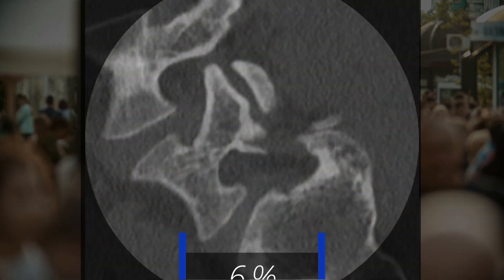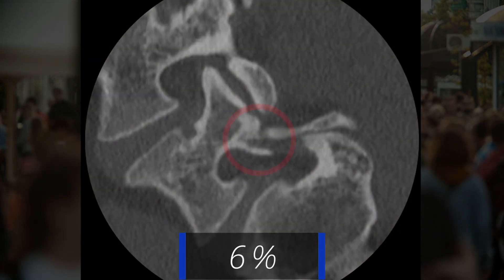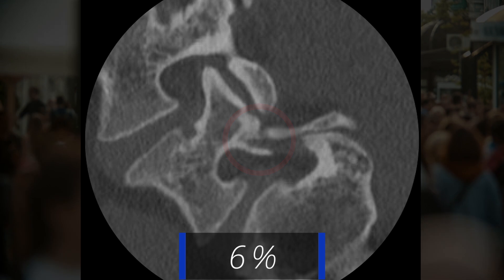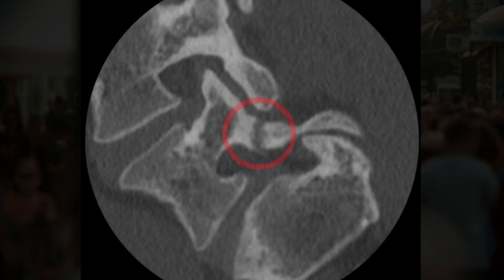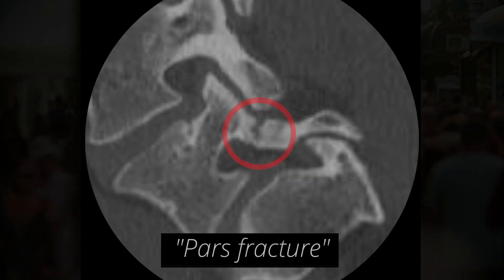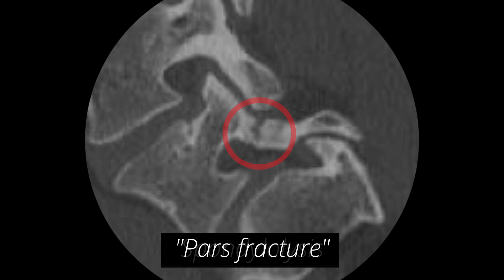Did you know that approximately 6% of the adult population in the U.S. has a fracture of the spine and most of them don't even know about it? This very interesting condition is known as a pars fracture, or spondylolysis, which can cause low back pain and sciatica.